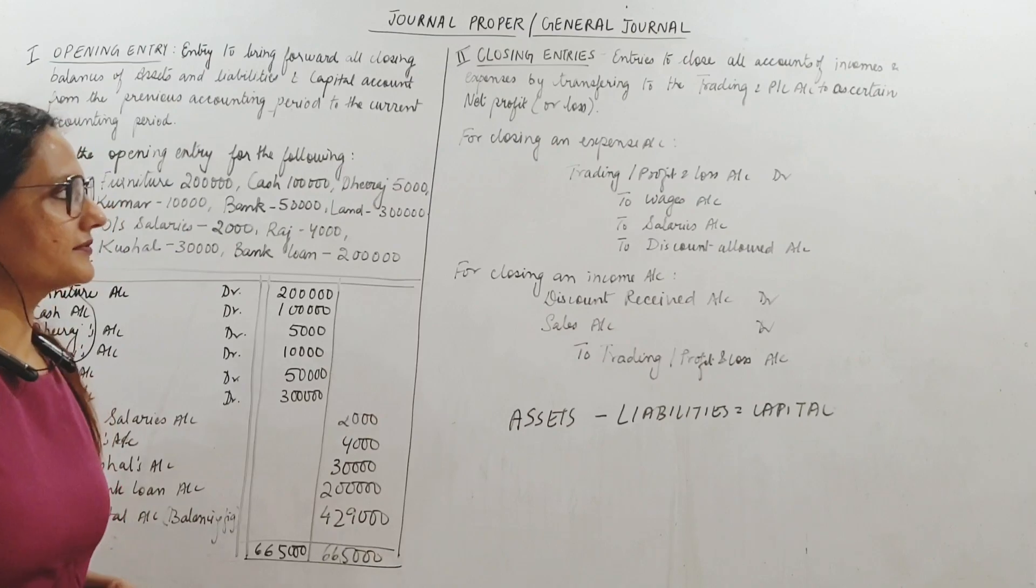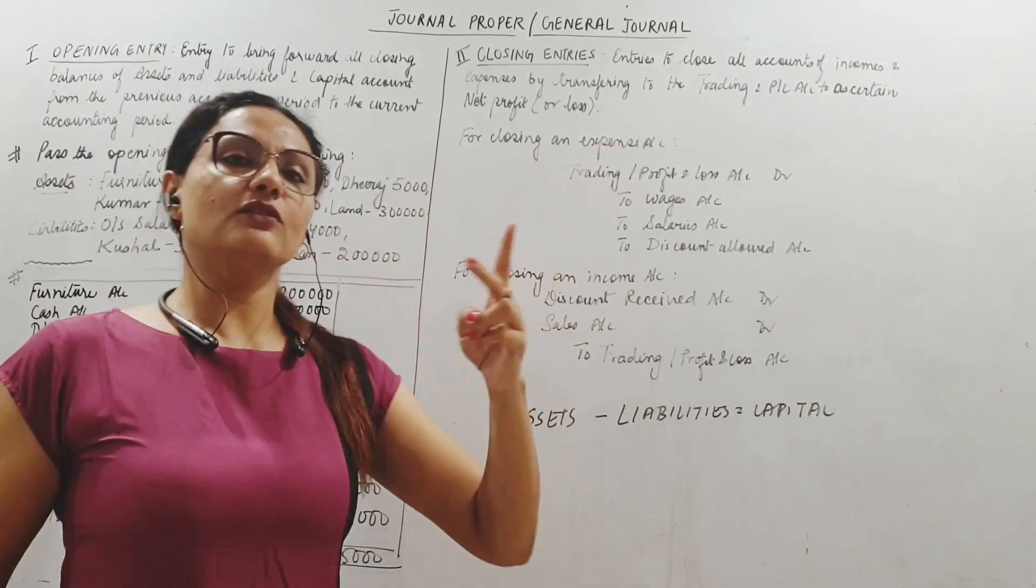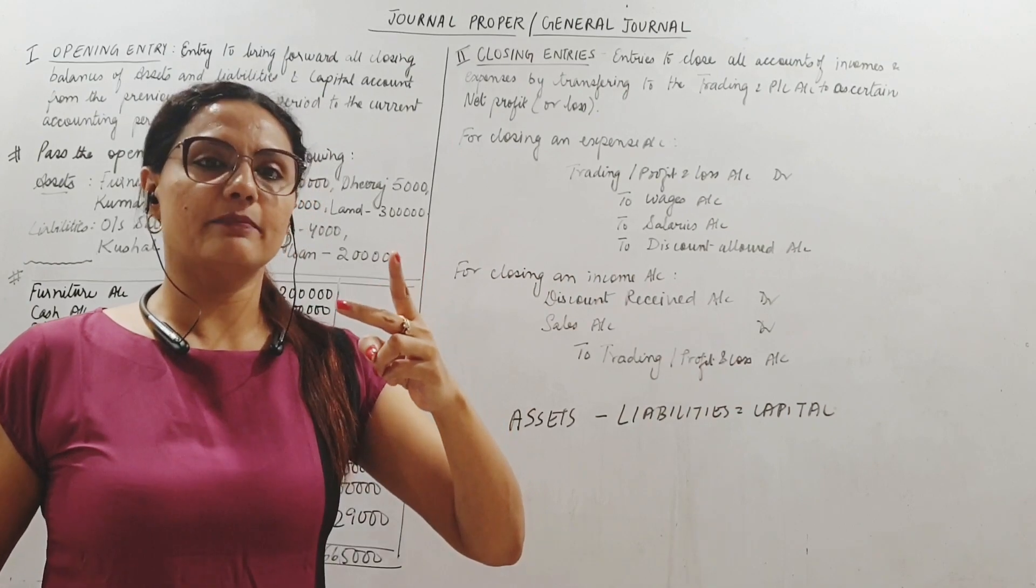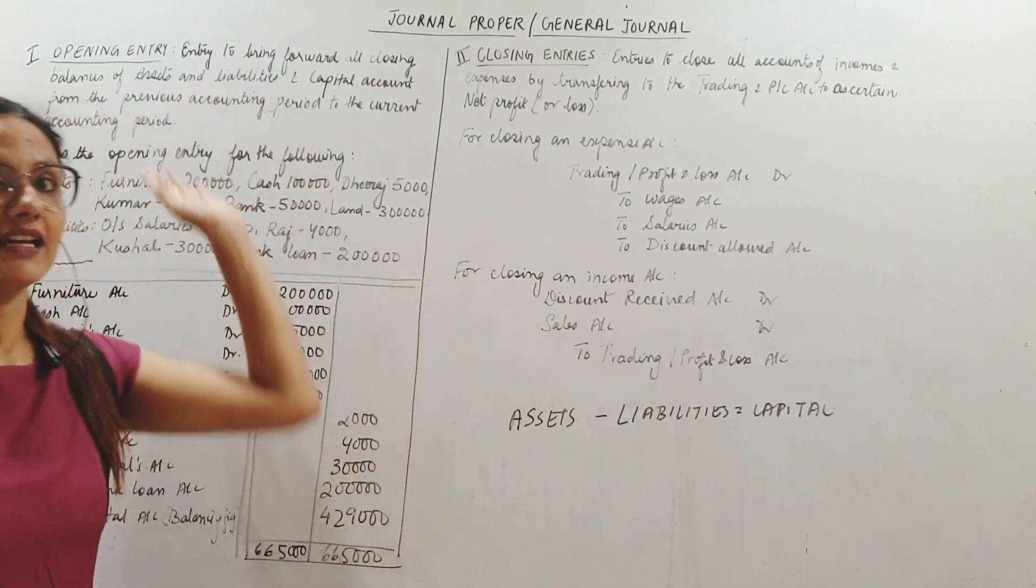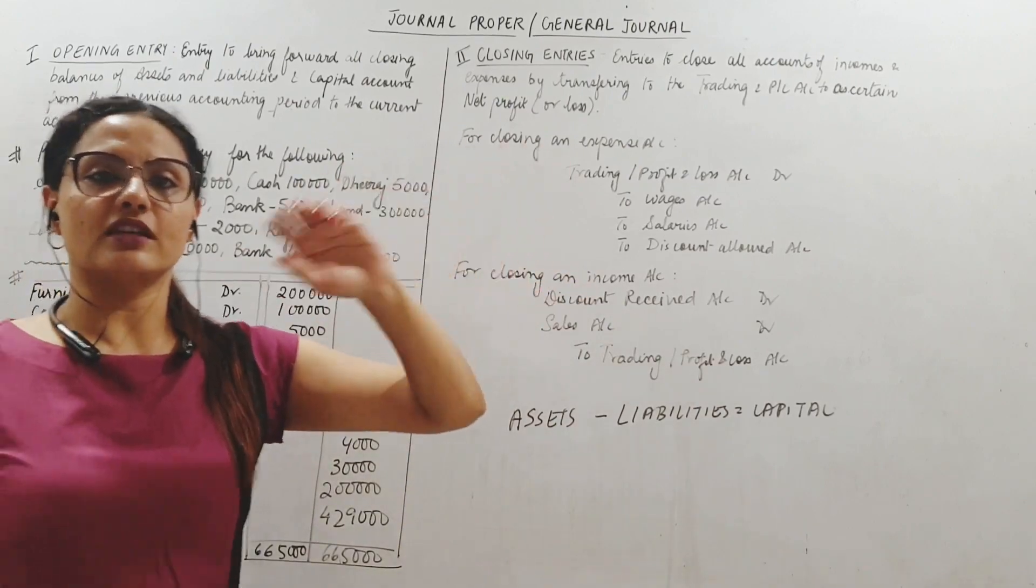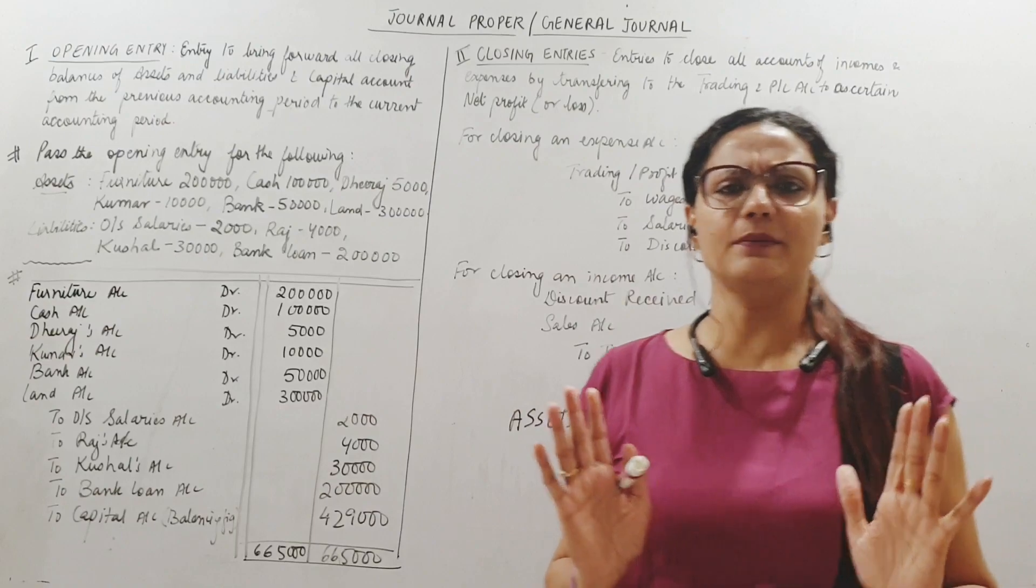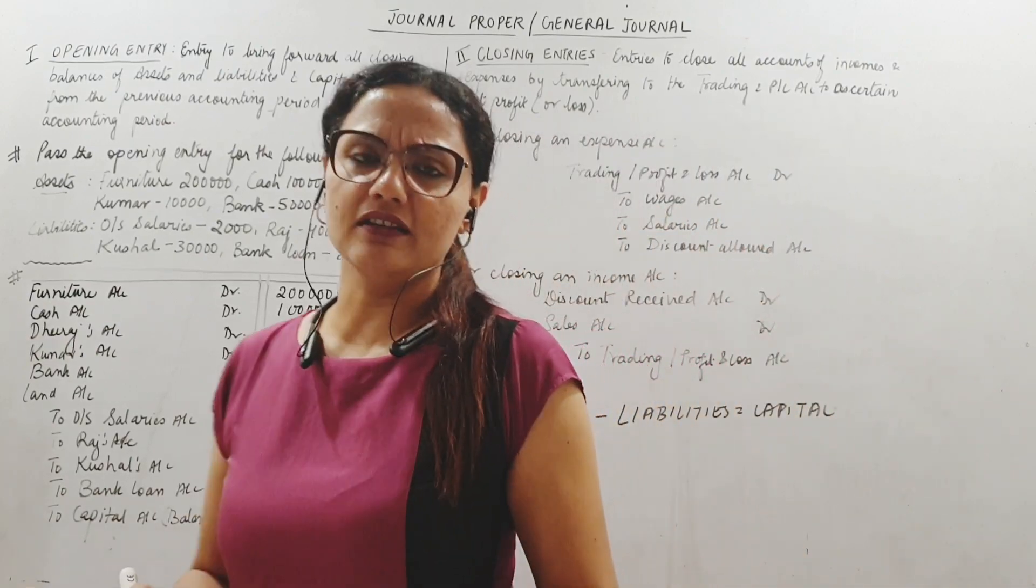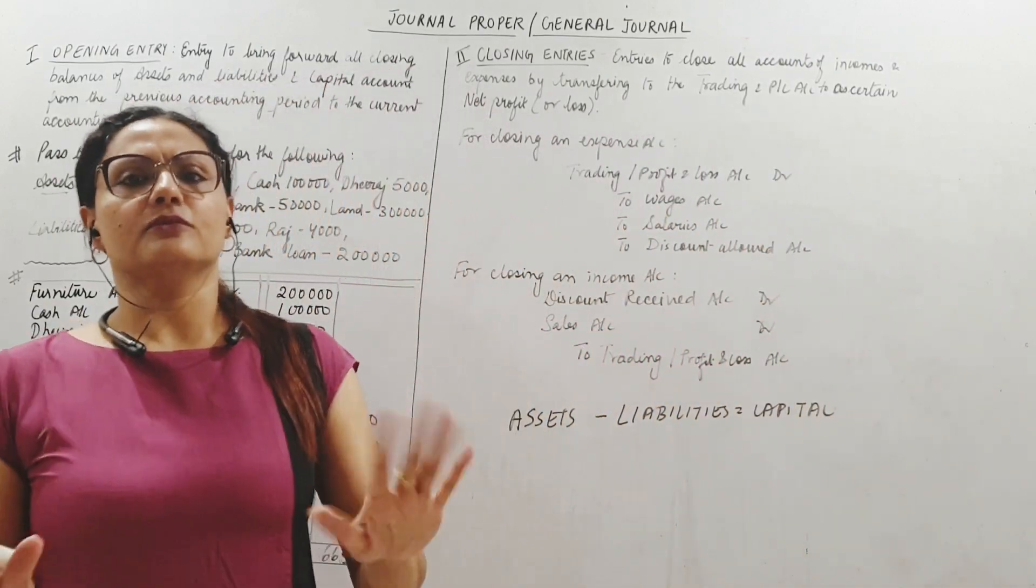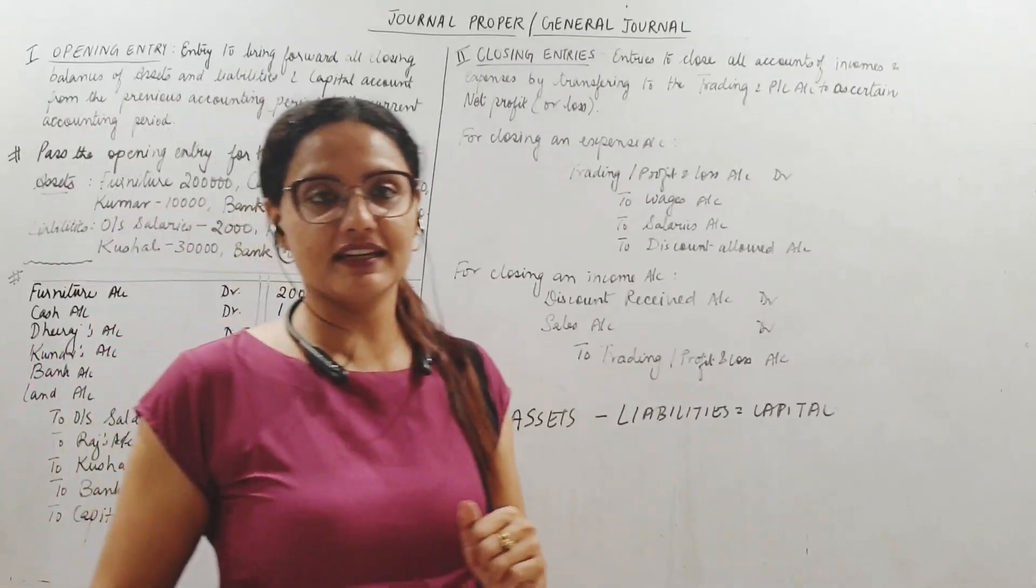Coming to closing entries. Closing of expense or closing of income - these are the only two things that you have to close. All other balances are carried forward to the next year, but expenses and incomes don't carry forward because all expenses and incomes relate to one particular period. Their benefit, their liabilities finish in one period.